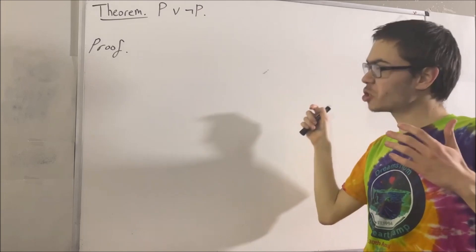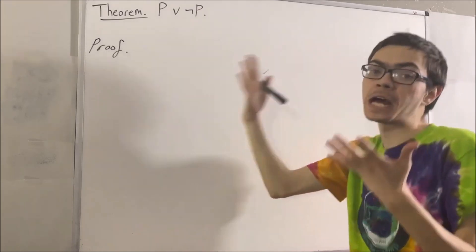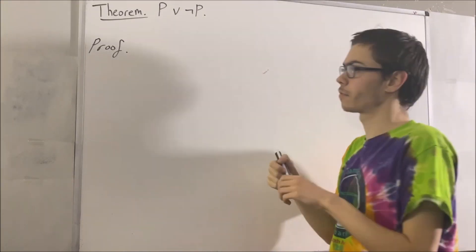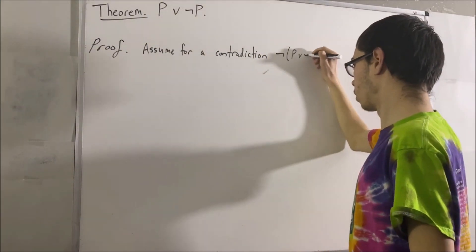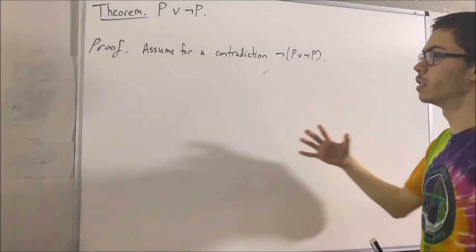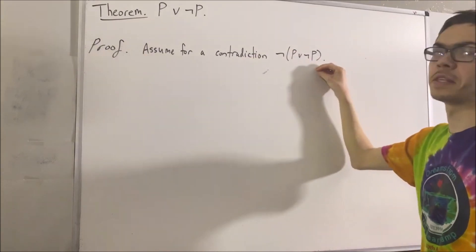Okay, so let's assume for a contradiction that we have not (P or not P). Our goal is from this assumption to reach a contradiction.